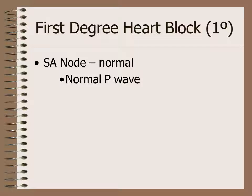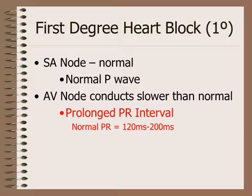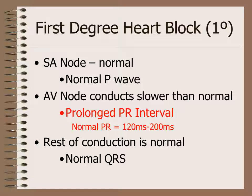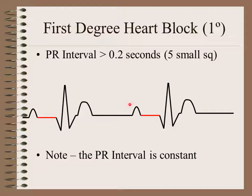Regarding first degree heart block: SA nodal impulse formation and conduction is normal, and conduction through the atria is normal so the P wave is normal, but AV nodal conduction is slower than normal. The normal PR interval should be between 120 and 200 milliseconds, so if the PR interval is longer than 200 milliseconds, this is first degree heart block. The rest of the conduction through the bundle branches is normal, so the QRS is normal. The PR interval here is more than 0.2 seconds or 200 milliseconds, confirmed from the beginning of the P wave to the beginning of the QRS.